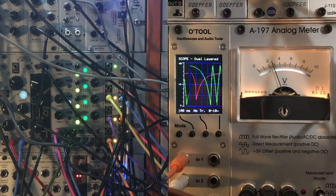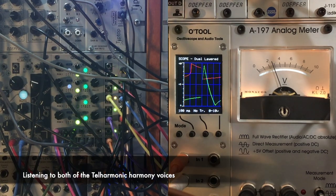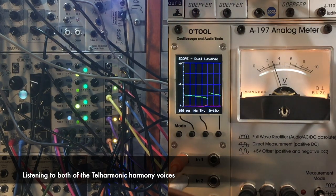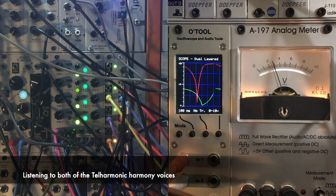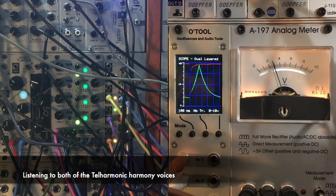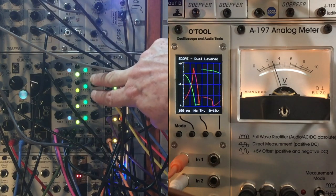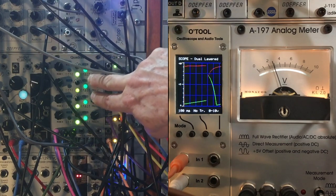So now what we're listening to is the two paraphonic harmony voices that we created using two telharmonics in shift register mode. They're each running off their own Krel function generators. That's the two inside channel 2 and 3 here on our quadrax.